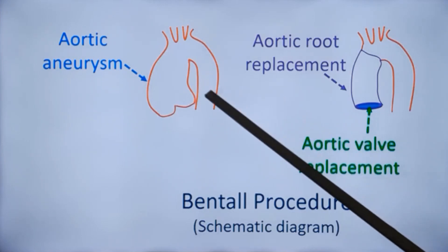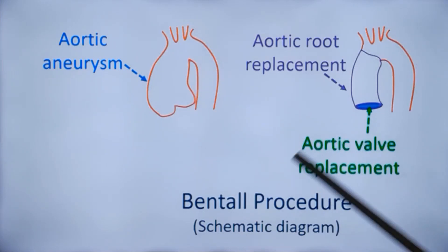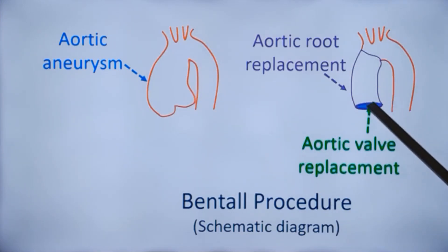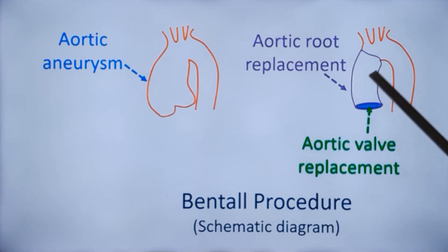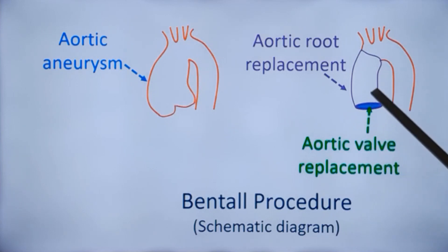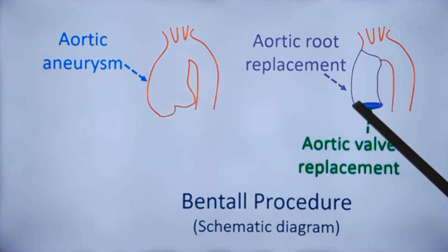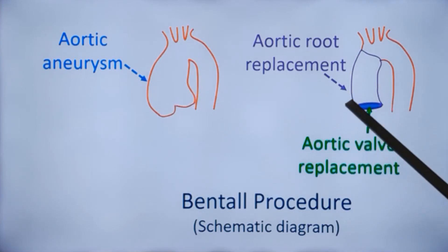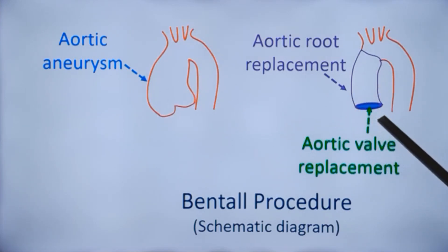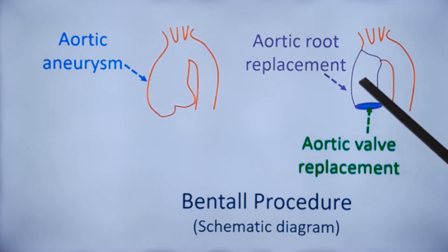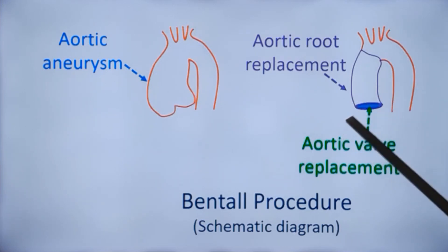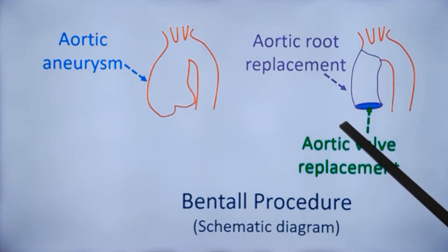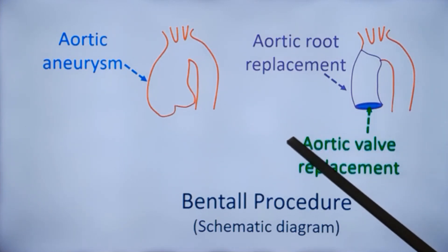Some say that using an aortic button will be easier for implanting the coronaries in the graft, as the size will be more. If implanting only the coronaries directly, then the size is less.